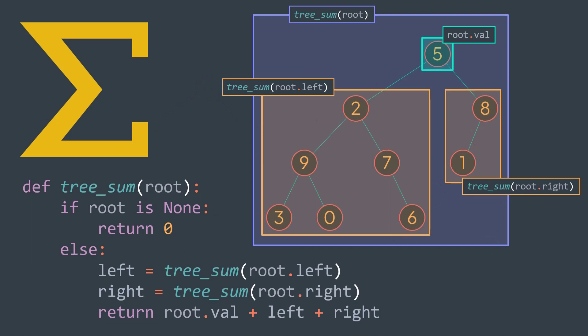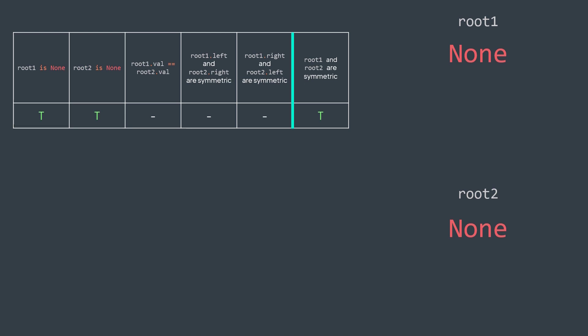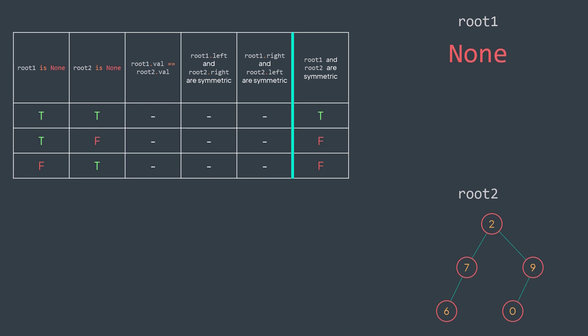Let's go back to our problem. We have two trees, root1 and root2, and we want to check if they're symmetric to each other. First case: both trees are empty. In that case, we return true because they're still symmetric to each other — there is nothing that breaks the condition. Second case: one tree exists but the other one doesn't. In that case, we directly deduce that they're not symmetric, because the node that exists doesn't exist in the other one. We return false.